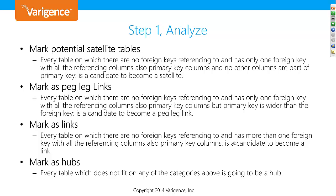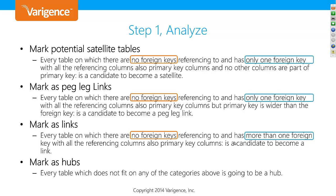When I looked at this initially, comprehension wasn't my favorite subject, so I had to read it a good couple of times. Then I started looking for what is common between these rules. The article says mark as hub every table — but what they should have said is every table is a hub unless it's a satellite or a link. So I needed to look for common patterns: the first was no foreign keys referencing this table, and the next was whether this table has one or more than one foreign key going out.